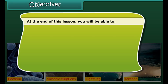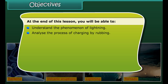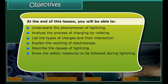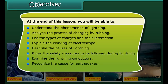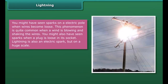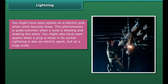Some natural phenomena such as volcanic eruptions, earthquakes, tsunamis, and tornadoes are considered dangerous and might lead to death on a large scale. At the end of this lesson, you'll be able to understand the phenomenon of lightning, analyze the process of charging by rubbing, list the types of charges and their interaction, explain the working of an electroscope, describe the causes of lightning, know the safety measures to be followed during lightning, examine lightning conductors, recognize the causes of earthquakes, and identify precautions to be taken during earthquakes.